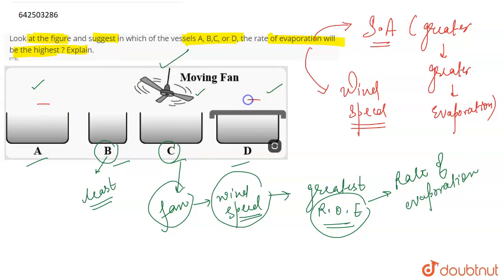If we talk about A and D, then A and D have the same surface area in comparison to C. But if you look at D, it is covered. So the rate of evaporation in D is even less than that of A.